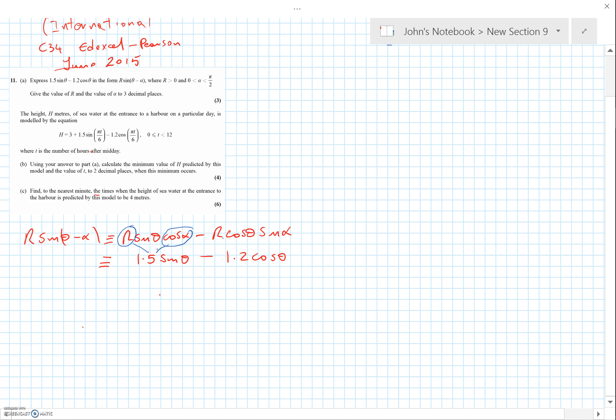Now, if they're equivalent they've got to be the same for all values. So that must mean that R cos α has got to be equal to 1.5 and R sin α has got to be equal to 1.2.